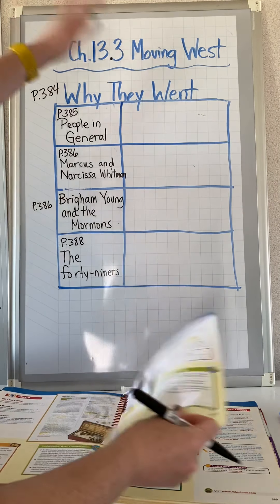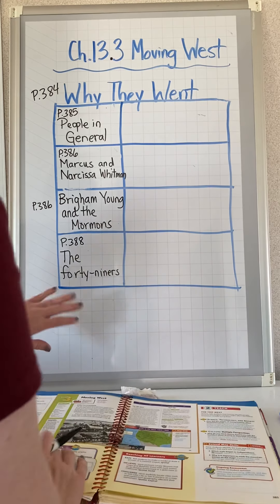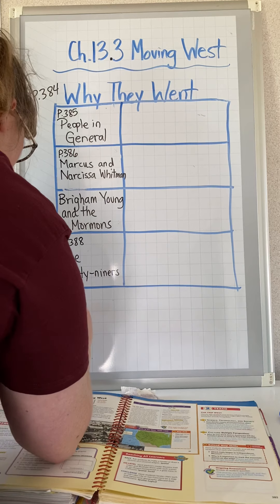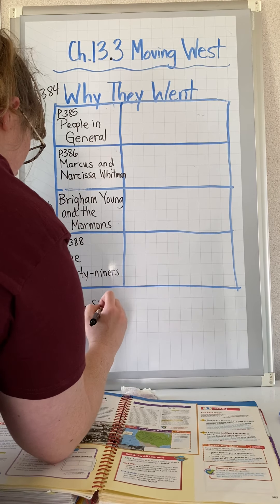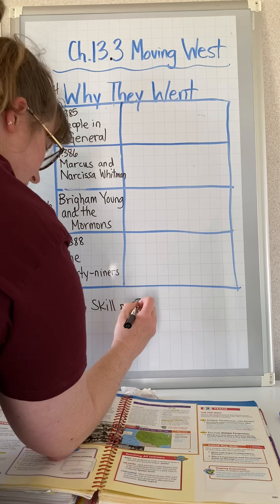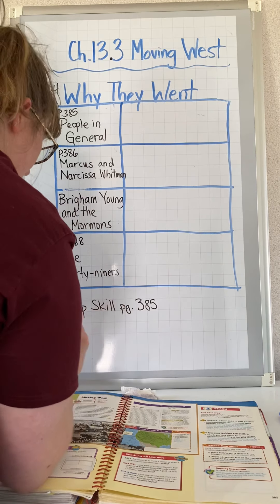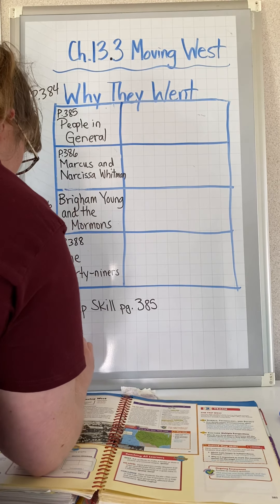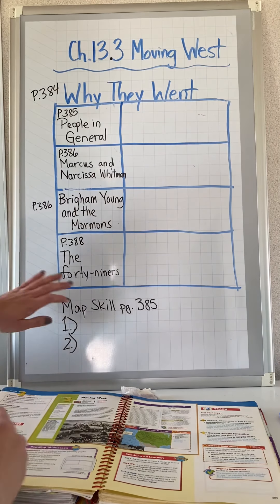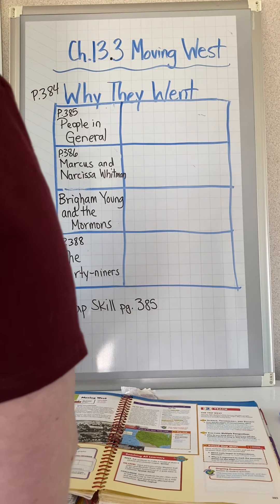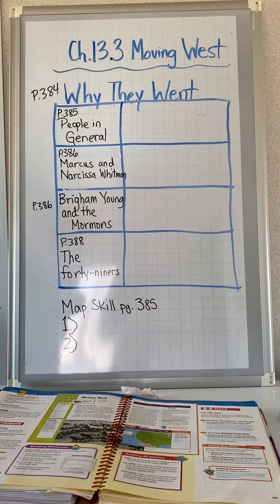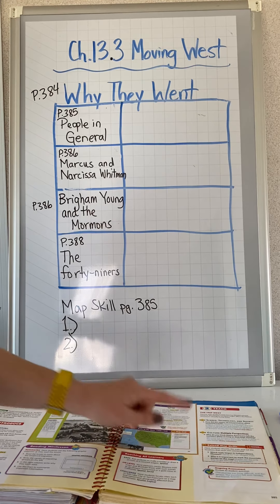Alright, get that set up in your notebook. The only other thing you're going to set up at the bottom is write 'Map Skill, page 385.' On your own, I want you to look through the map and answer numbers one and two. You'll do that on your own, but please make sure you have it down. You'll be filling in why they went west and then do the map skill on page 385 — there are two questions on the right side of the map.